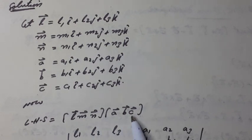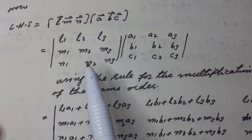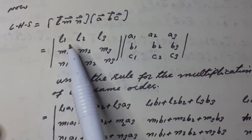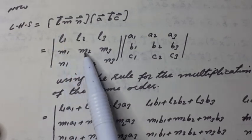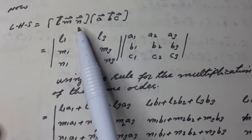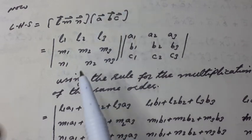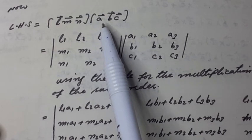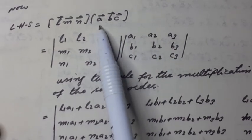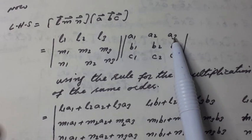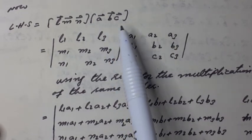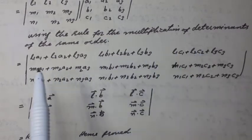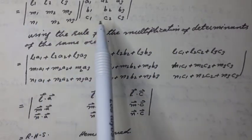Now the left-hand side, [L M N]·[A B C], can be written as the product of two determinants: the first with rows (l1, l2, l3), (m1, m2, m3), (n1, n2, n3); and the second with rows (a1, a2, a3), (b1, b2, b3), (c1, c2, c3). Using the rule for multiplication of determinants of the same order,